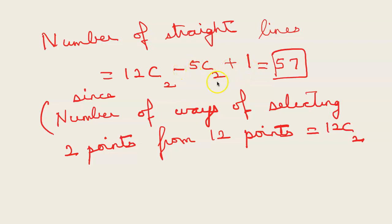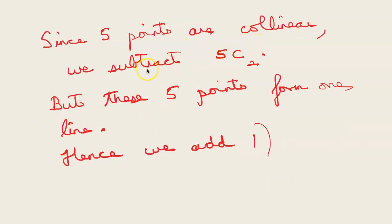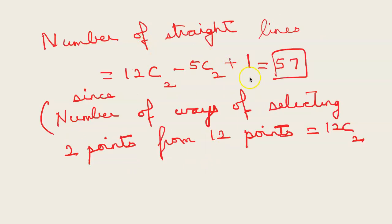And we delete minus 5C2 because 5 collinear points will give only 1 line. This is because number of ways of selecting 2 points from 12 points is 12C2. Since 5 points are collinear we subtract 5C2 because they form 1 line, but these 5 points form 1 line so we add 1. Hence the answer 12C2 minus 5C2 plus 1 which is 57.